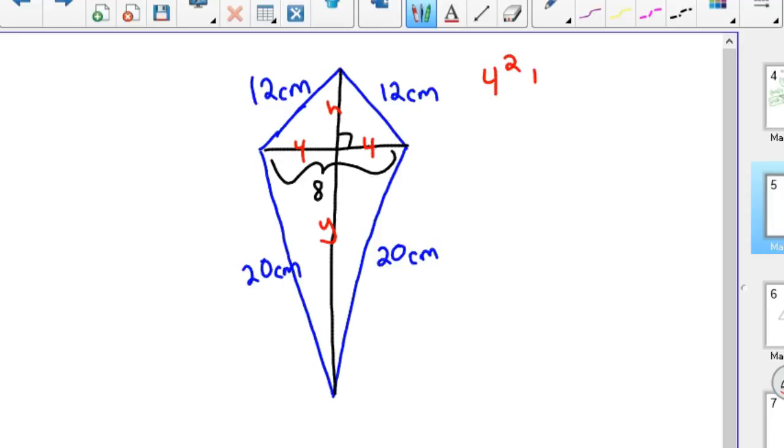So 4 squared plus h squared equals 12 squared. That gives you the height of the top one. The bottom one would be 4 squared plus y squared equals 20 squared. And you solve both of those. And we already found this, this h here in the last video. We had the similar problem.